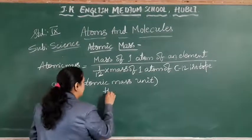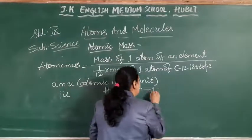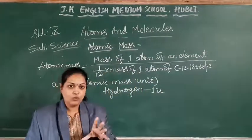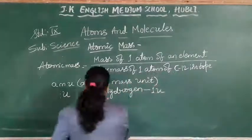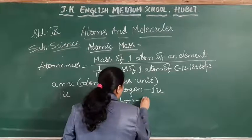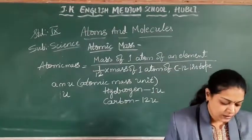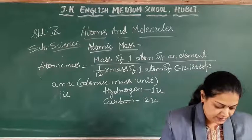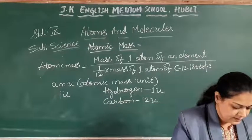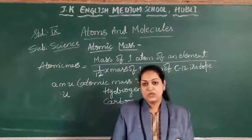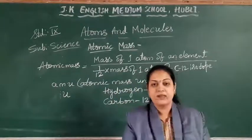For example, hydrogen — the atomic mass of hydrogen is 1 U. Carbon — the atomic mass of carbon is 12 U. Next, nitrogen — that is 14 U. So this is about the meaning of atom as well as atomic mass. The remaining topics we will discuss in our next class. Thank you.